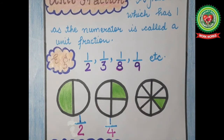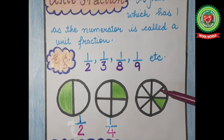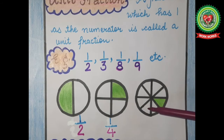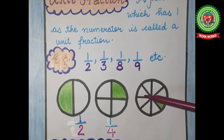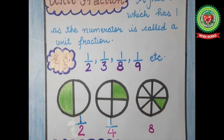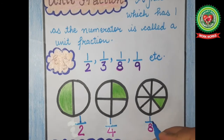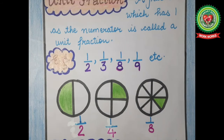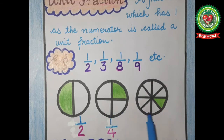Now let's move to the next example. Let's count the total number of parts of the circle: one, two, three, four, five, six, seven and eight — total parts are eight. And out of eight parts, how many parts are shaded? One part. You can see here, the numerator is one for each figure. So these figures show unit fractions. Now let's move to the other fraction.